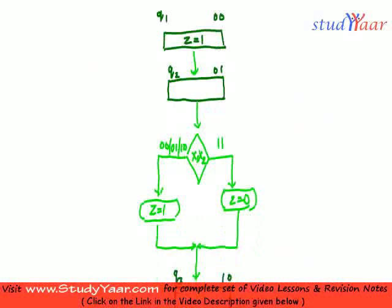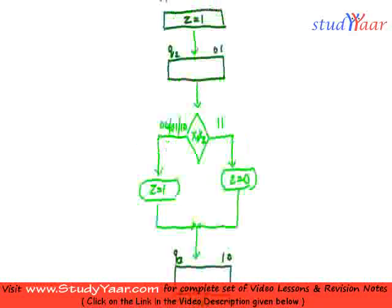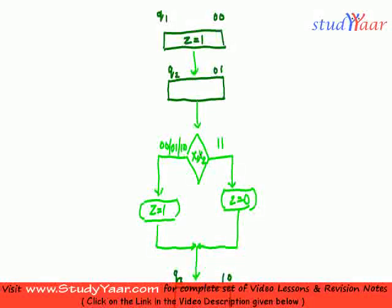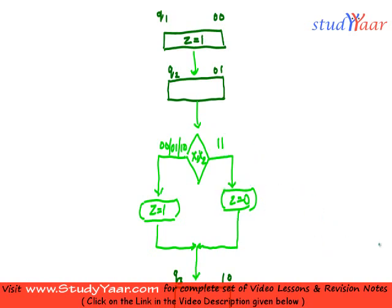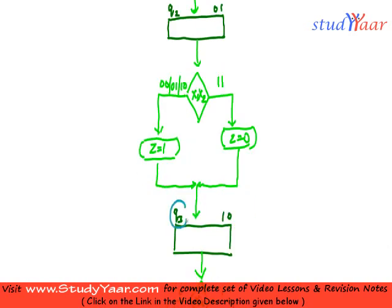Now let's look at this ASM chart. In this ASM chart, I have two input variables: x1 and x2. I have state q1. From q1, it directly goes to q2 irrespective of x1 and x2, and in q1 an output of 1 is produced. Then from q2, I have to check the inputs. If x1, x2 is 1, 1, then z is equal to 0 is produced and I go to q3.